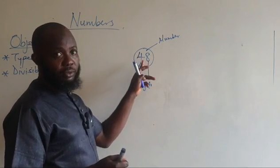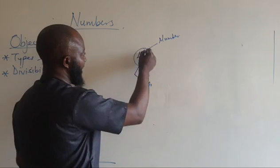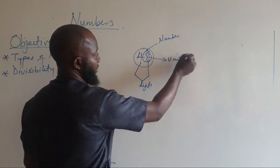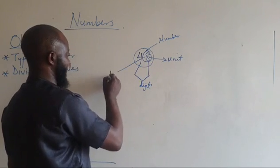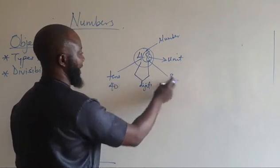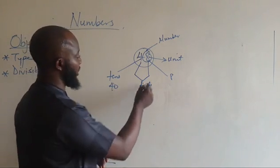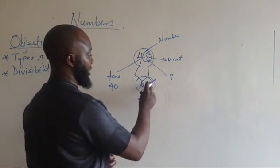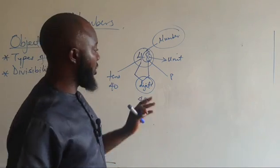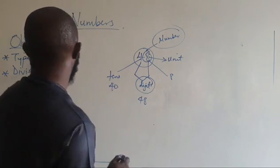Each digit has a value — they have their own value in a number. The value of the 8 in this number is units, which is 1. The value of the 4 is in the tens place, so it's 40. That means it's 40 and 8. When you have 40 and 8 together, you get 48. So we'll be able to differentiate between what a digit is and what a number is — they are two different things. Understanding these concepts, digits and numbers, is important.